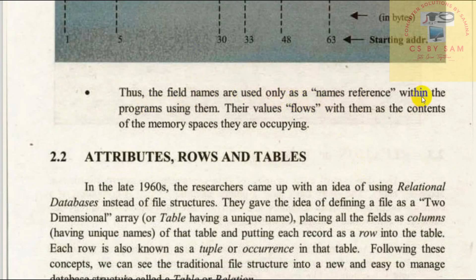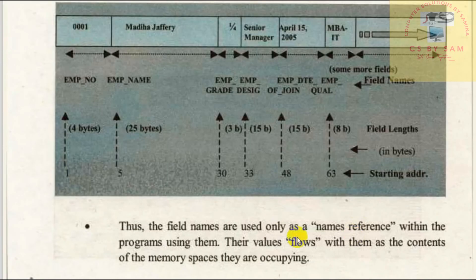The field names are used only as name references within the program. Their values flow with them as the contents of the memory spaces they occupy. When we read and write values, we refer to the name and reference in the program. We can access the contents from the memory location.